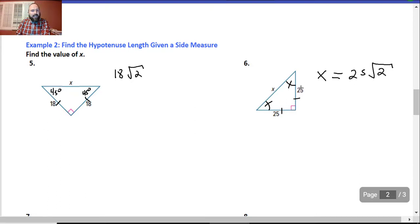Remember, it's the leg times radical 2, and that's equal to the hypotenuse. Remember, the hypotenuse of the 45, 45, 90 triangle is equal to the leg times radical 2.